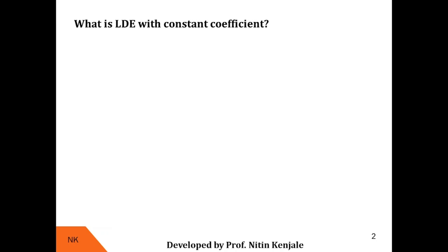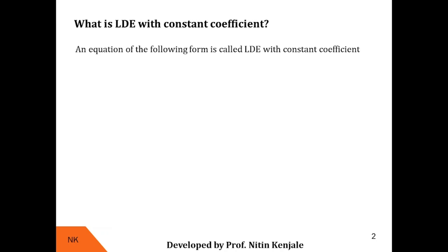As the name suggests, this is a linear differential equation, meaning its highest degree is 1. The dependent variable and its derivatives will have degree 1. Therefore, this differential equation is called a linear differential equation. Apart from this, all its coefficients are constant in nature. Therefore, this differential equation is called a linear differential equation with constant coefficients, and it looks like this.